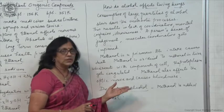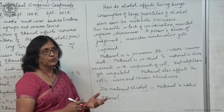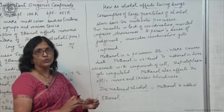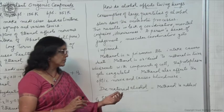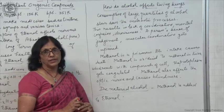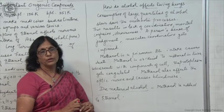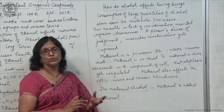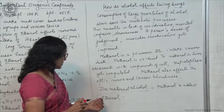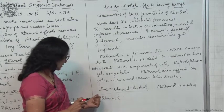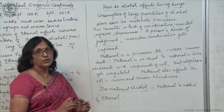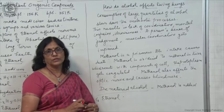Ethanol is a very good solvent used for industrial purposes. To prevent it from being used for drinking purposes, poisonous substances like methanol are added to ethanol to make it unfit for drinking. Also, sometimes dyes are added to ethanol. This type of alcohol is called denatured alcohol so that it should be used only for industrial purposes.